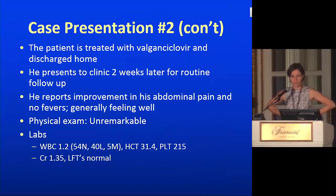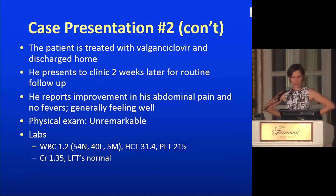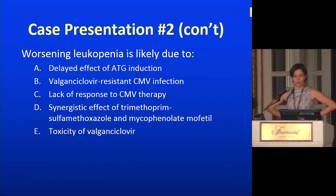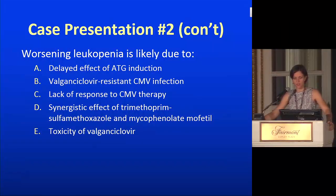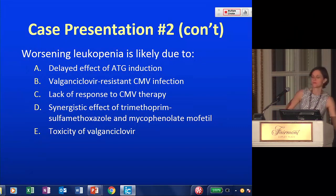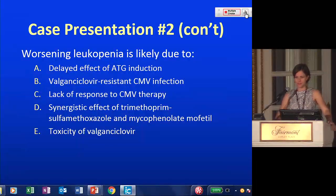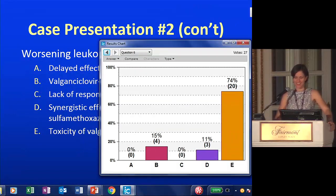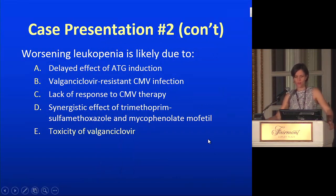Back to the case: the patient is treated with valganciclovir and discharged home. He returns two weeks later feeling better, exam is unremarkable, but his white count is now 1.2, hematocrit 31, platelets 215, creatinine at baseline at 1.35, and LFTs normal. The question: what is the worsening leukopenia likely due to? Options include ATG delayed effect, valganciclovir-resistant CMV, lack of response to therapy, synergistic effect of Bactrim and mycophenolate, or valganciclovir toxicity. Most people correctly identified E — toxicity of valganciclovir.